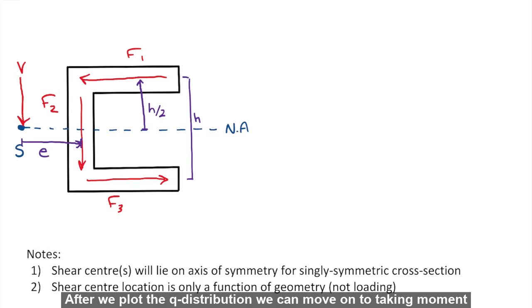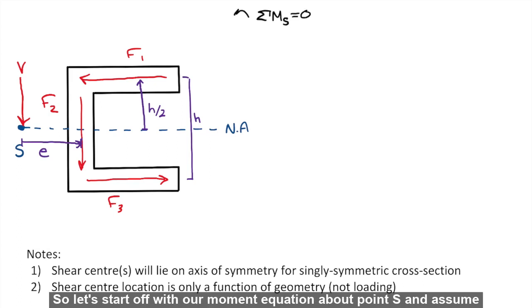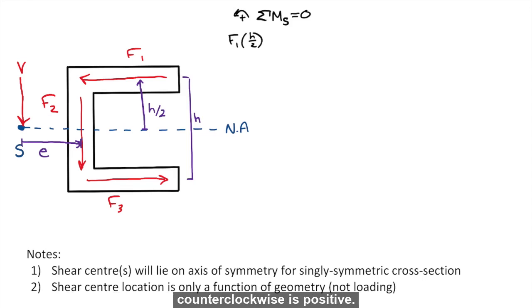After we plot the q distribution, we can move on to taking moment about point S to solve for e, which is the distance to the shear center. So let's start off with our moment equation about point S and assume counterclockwise is positive.